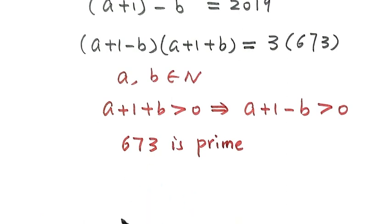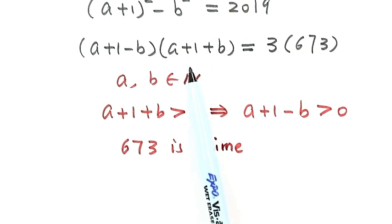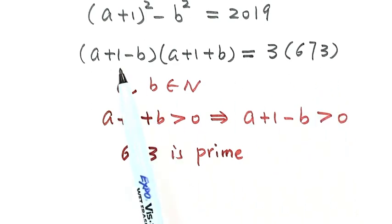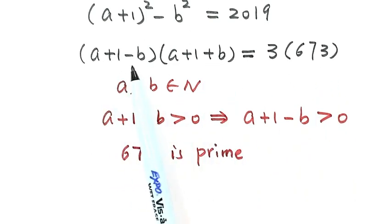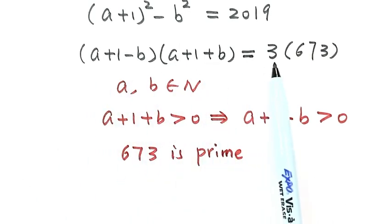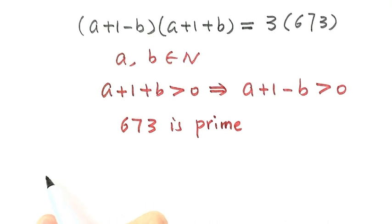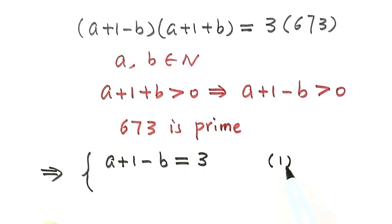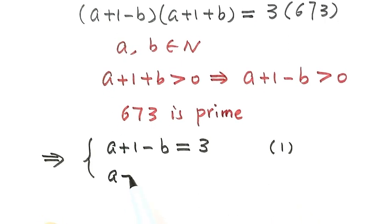So the product on the left-hand side equals the two prime factors on the right-hand side. Also, since one factor is a minus and the other is a plus, the first factor is less than the second. So we have two equations: a plus 1 minus b equals 3 (first equation), and a plus 1 plus b equals 673 (second equation).